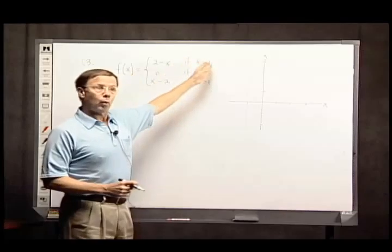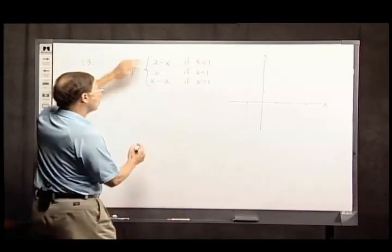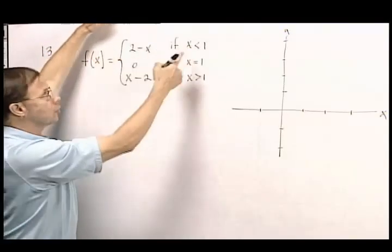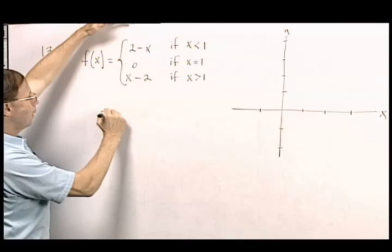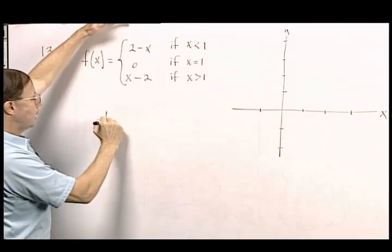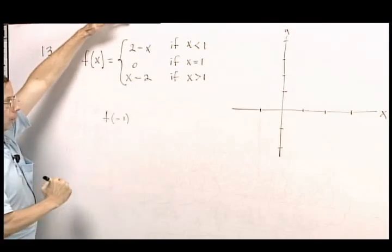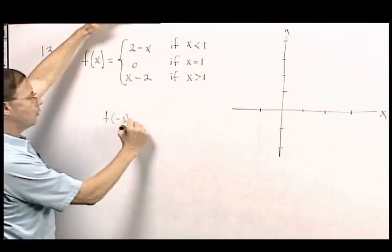So I'm going to find a couple of points on this graph. I'm going to take some x value, or an x value less than 1, say f of negative 1. In other words, I'm looking for what is the y value that goes with an x value of negative 1.